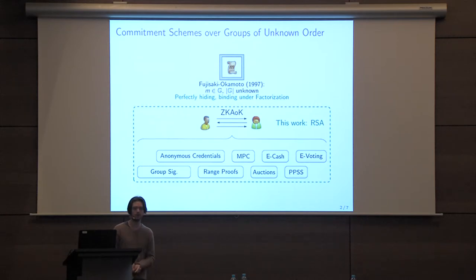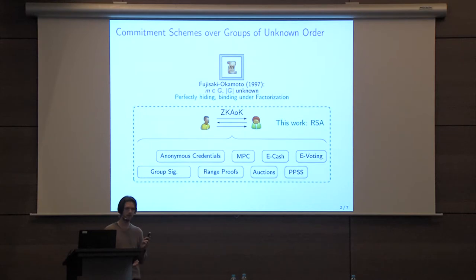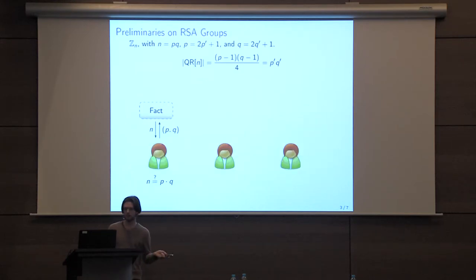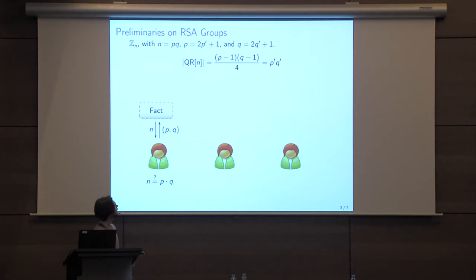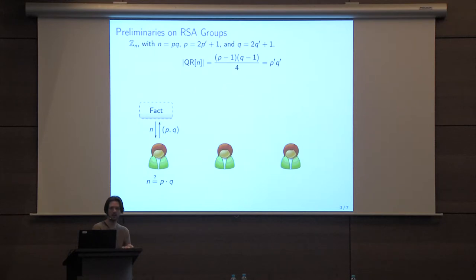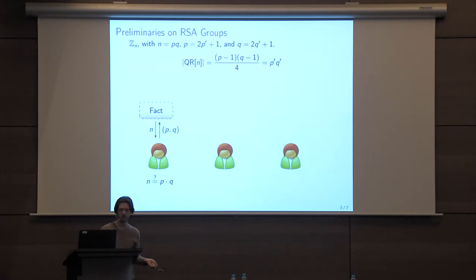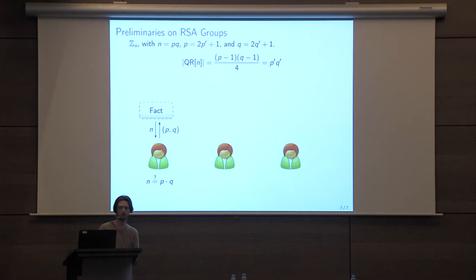So how do we do that? Before entering into the details, let me give some preliminaries on RSA groups. We will consider Z_N where N is the product of two safe primes, and we look at the subgroup of quadratic residues mod N — the multiplicative subgroup of squares. Its order depends on p−1 and q−1, which means it is unknown, because knowing the order is equivalent to knowing the factorization.